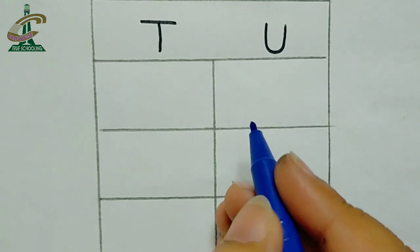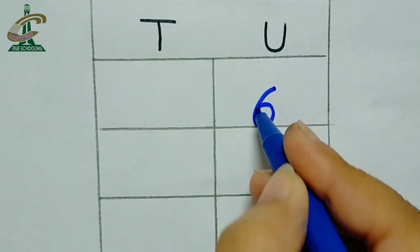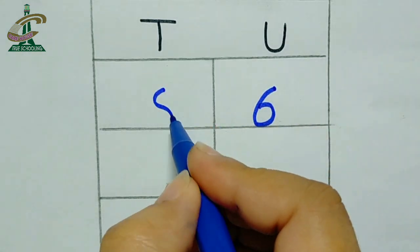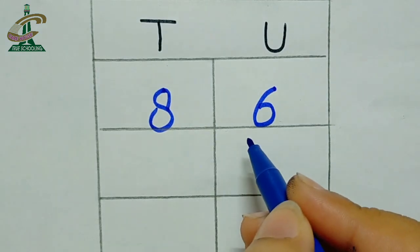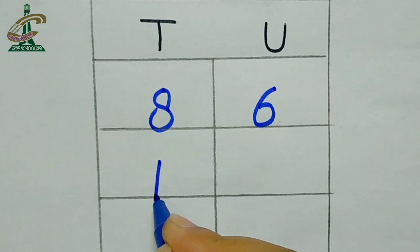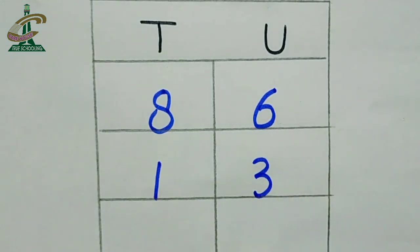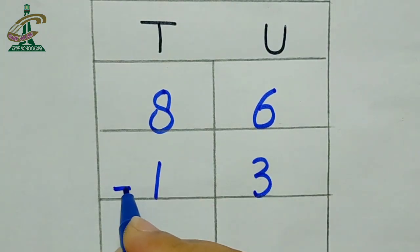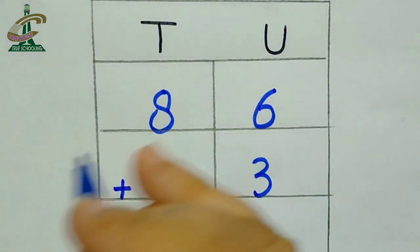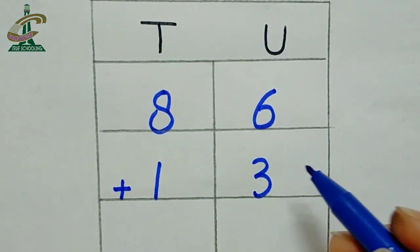I am writing the number. The number is 86. Which number is this? 86. And downside we have one more number which is 13. How we can count the numbers? Always start addition from right hand side. From where we will start the addition? We will start addition from right hand side. And how we can add the number students?